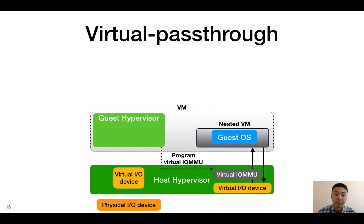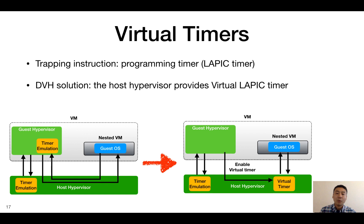The second example is virtual timers. On Intel x86 architecture, there is just one physical timer, which is called an LAPIC timer. Programming this timer inside the VM will exit and be emulated by the hypervisor, because the hypervisor is using the physical timer already. For the same reason, programming this timer inside the nested VM will exit to the guest hypervisor, as shown in the diagram on the left. With the DVH design, we provide an additional LAPIC timer to the VM, which is a virtual LAPIC timer. When the guest hypervisor enables this timer to the nested VM, the host hypervisor maps the virtual timer to the nested VM's LAPIC timer. So programming a timer in a nested VM will be transparently handled by the host hypervisor with a single exit.